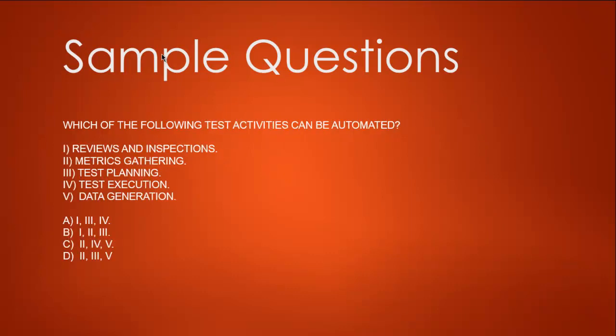Next question: which of the following test activities can be automated? Options are: one - reviews and inspection, two - matrix gathering, three - test planning, four - test execution, five - data generation. Option A is one, three, and four. Reviews and inspection cannot be automated; we have to use human staff for most reviews and inspections, so option A is not true.